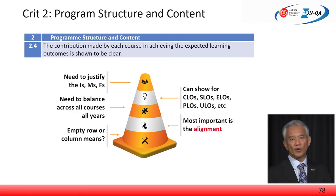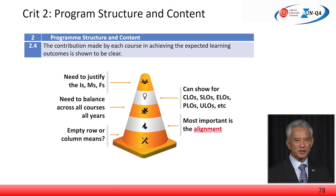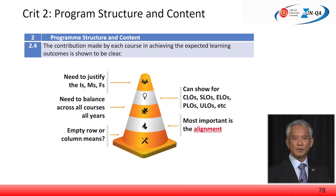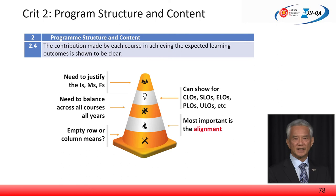Requirement 2.4 spells out cautions or issues that assessors would pay particular attention to in evaluating the courses to ELO map. These points have been mentioned, and there can be multiple maps or various types of learning outcomes: courses LOs, programme LOs, university LOs, LOs for students, and so on. We note that different terminologies may be used in different universities in different countries.